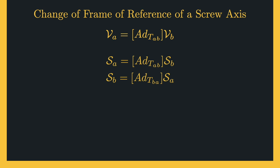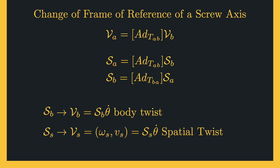If the screw axis is expressed in coordinates of the body frame B, then this equation is called the body twist, which is not affected by the choice of the space frame. If the screw axis is expressed in coordinates of the space frame S, then this equation is called the spatial twist, which is not affected by the choice of the body frame. Thus we only need to define the frame in which the twist or screw is represented — no other frames matter.